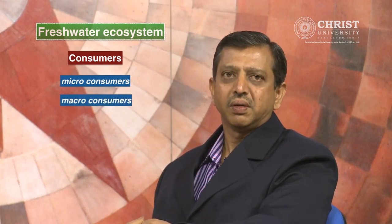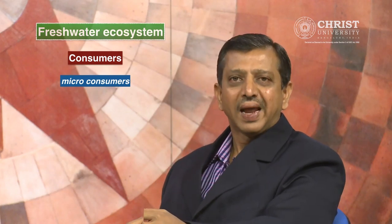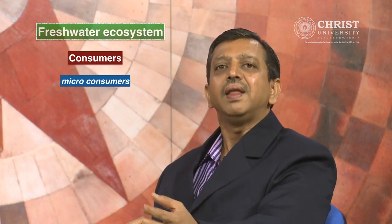Consumers are heterotrophs which directly or indirectly feed on the producers. Consumers are of two types: micro consumers and macro consumers. Micro consumers are minute animals that float on the surface of the pond or lake. They are called zooplanktons, found along with phytoplanktons upon which they feed, and therefore they are called primary consumers.